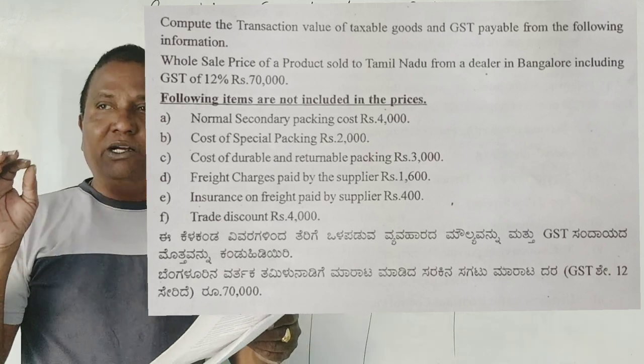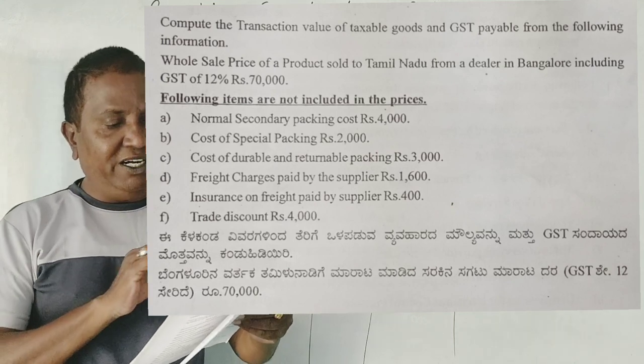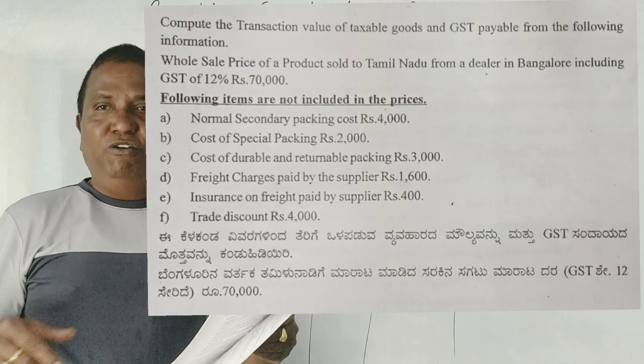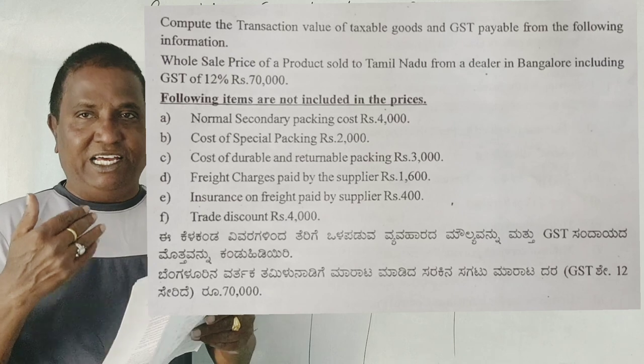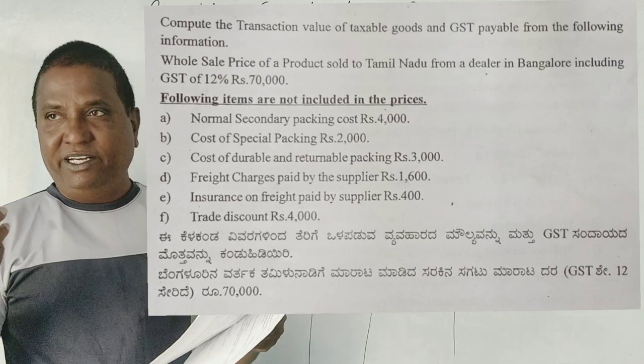70,000 includes GST of 12%. Following items are not included in the prices. At 70,000 price, the following items are not included. The normal secondary packing costs are not included in the price.